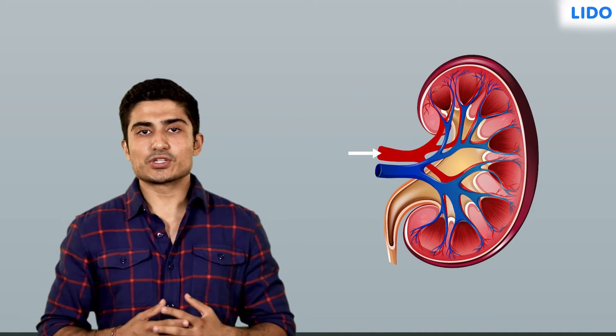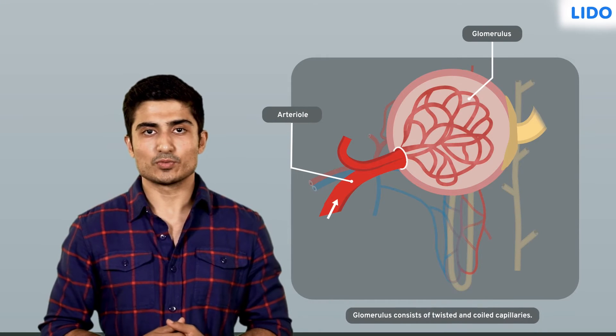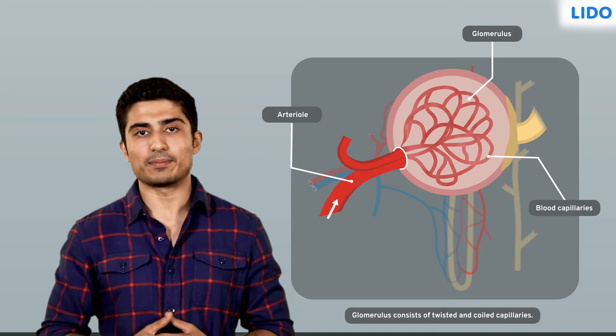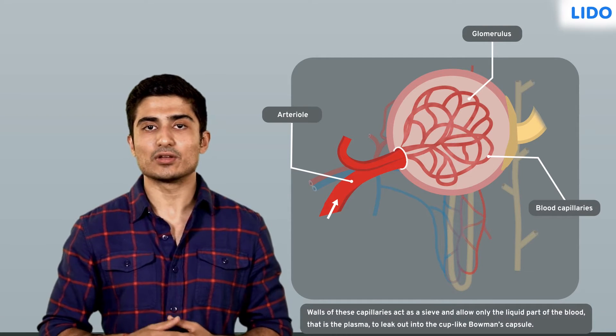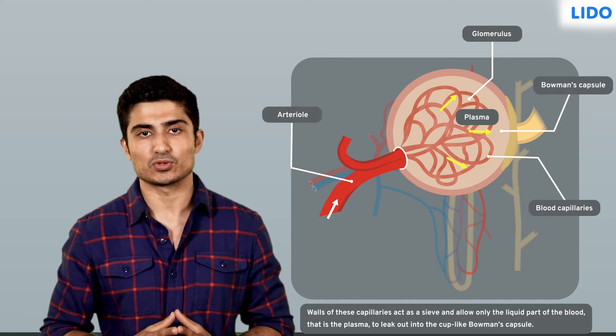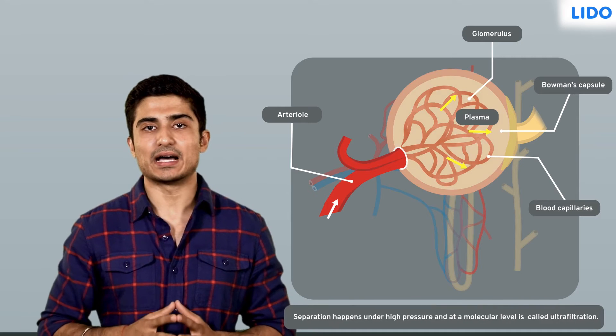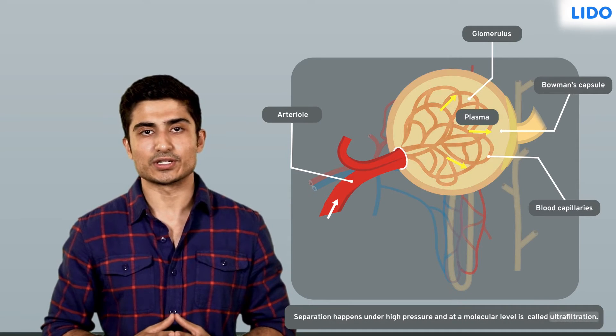The renal artery branches to form arterioles and each arteriole then enters the glomerulus, which consists of twisted and coiled capillaries. The walls of these capillaries act as a sieve and only allow the liquid part of the blood, the plasma, to leak out into the cup-like Bowman's capsule. This separation happens under high pressure and at a molecular level, so it is called ultrafiltration.